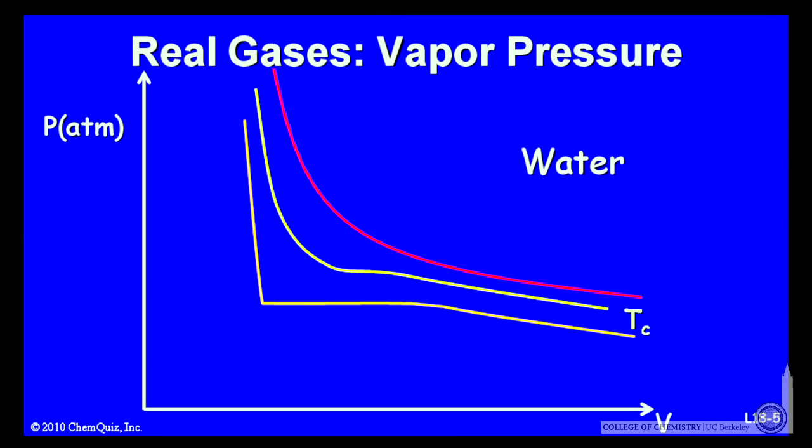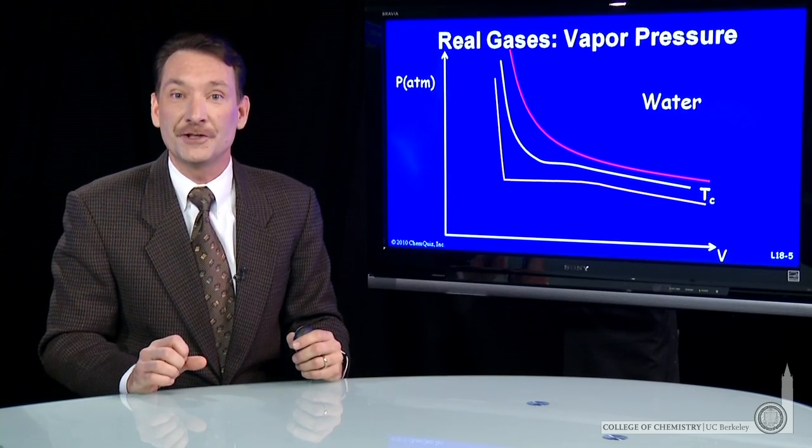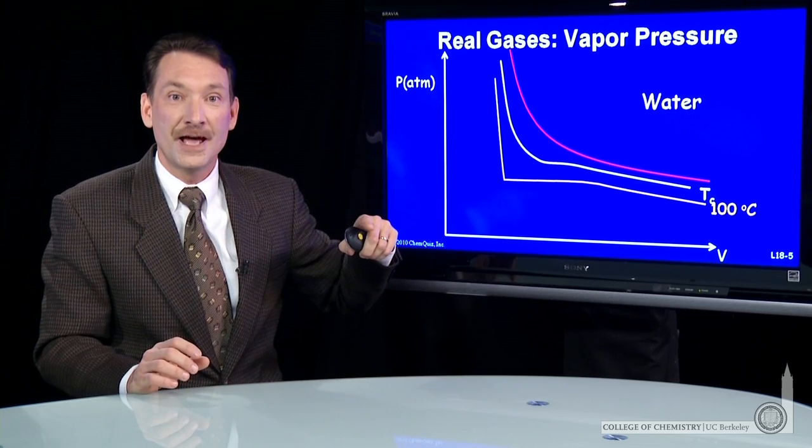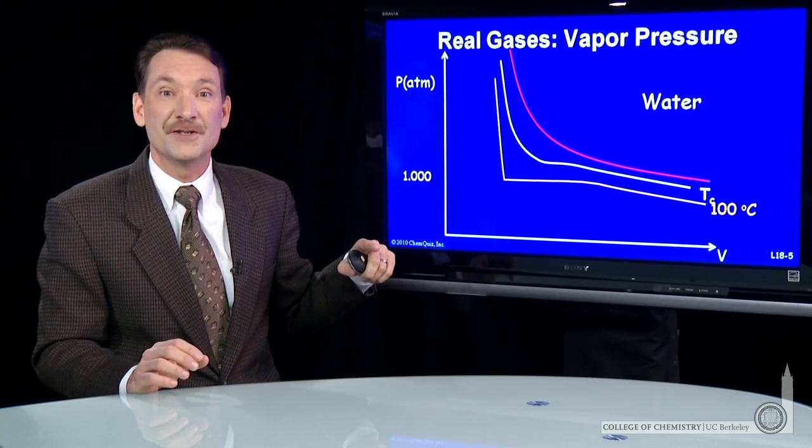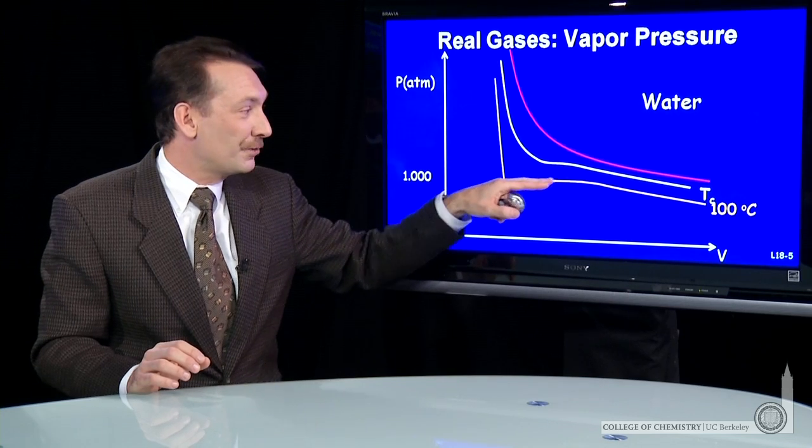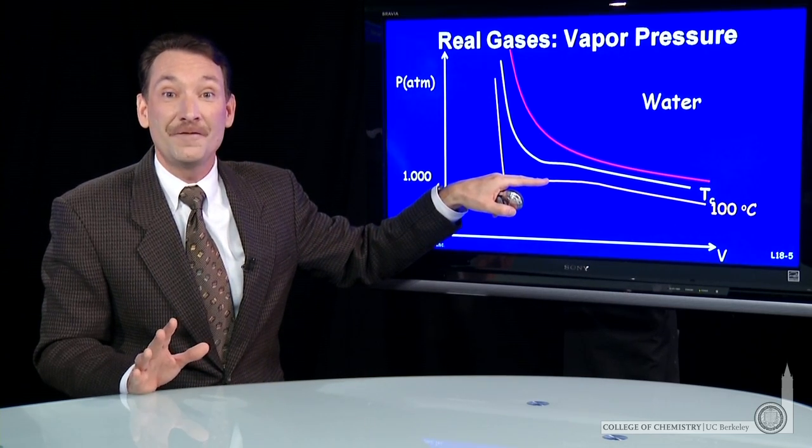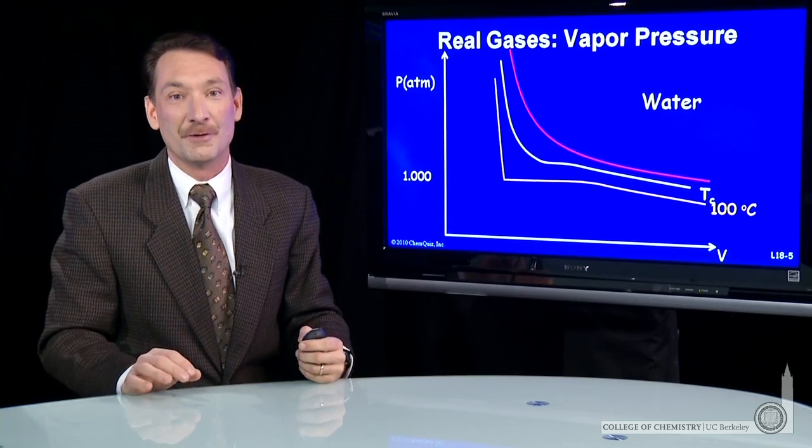The normal boiling point is the point that water boils at atmospheric pressure. That's 100 degrees C. Where does this flat line occur at 100 degrees C? Well, I think you can guess. It's going to be one atmosphere of pressure. That's the pressure where a decrease in volume doesn't involve an increase in pressure because the gas can condense into the liquid phase.